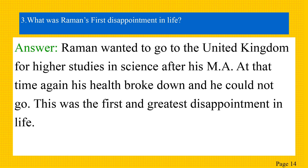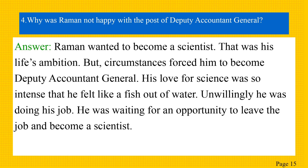The next question is: why was Raman not happy with the post of Deputy Accountant General? The answer is: Raman wanted to become a scientist — that was his life's ambition. But circumstances forced him to become Deputy Accountant General. His love for science was so intense that he felt like a fish out of water. Unwillingly he was doing his job. He was waiting for an opportunity to leave the job and become a scientist.